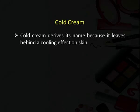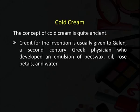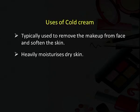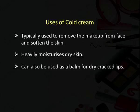Cold cream derives its name because it leaves behind a cooling effect on skin. It is an emulsion of water-in-oil type, meaning large quantity of oil and less quantity of water. The concept of cold cream is quite ancient. Credit for the invention is usually given to Galen, a second century Greek physician who developed an emulsion of beeswax, oil, rose petals and water to apply on the skin. The cream was designed to moisturize and condition the face and help remove harsh makeup. Its two basic functions are to remove makeup and soften the skin. It can heavily moisturize dry skin and can also be used as a balm for dry cracked lips.